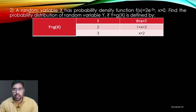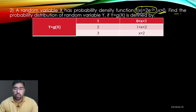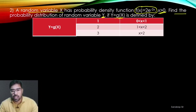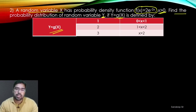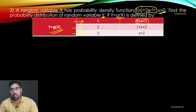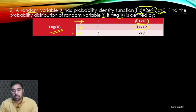In the next example, a random variable X has the probability density function f(x) = 2e^(−2x) for x greater than 0. We need to find the probability distribution of Y = g(X), where g(X) is defined piecewise: Y = 1 when 0 < X ≤ 1, Y = 2 when 1 < X ≤ 2, and Y = 3 when X > 2. Here X is continuous and Y is discrete.